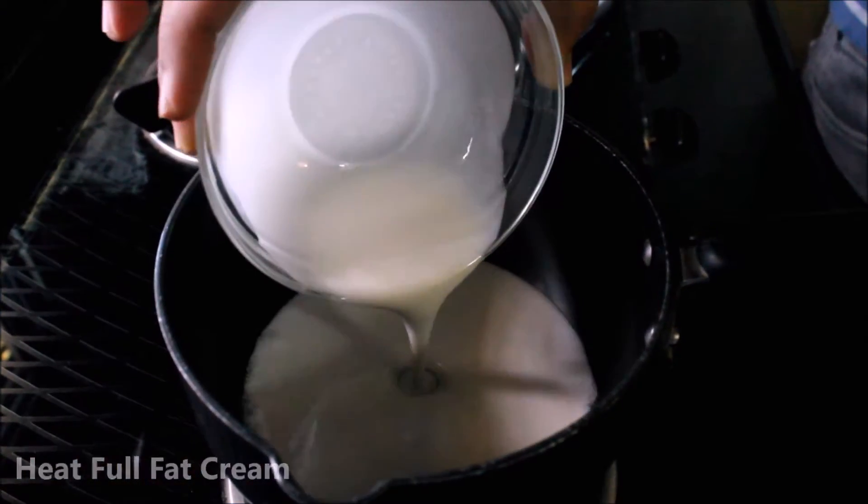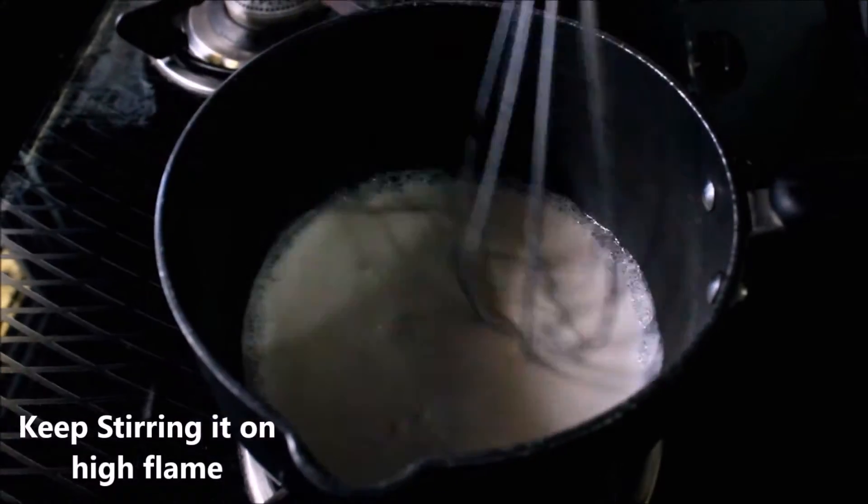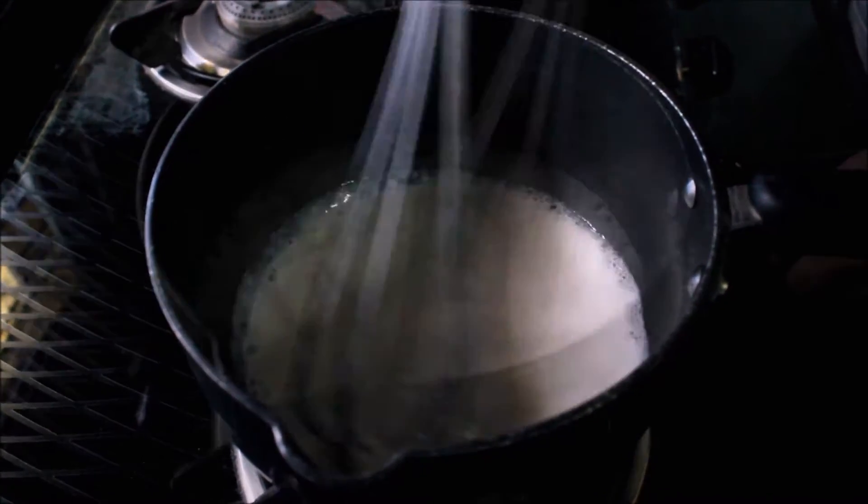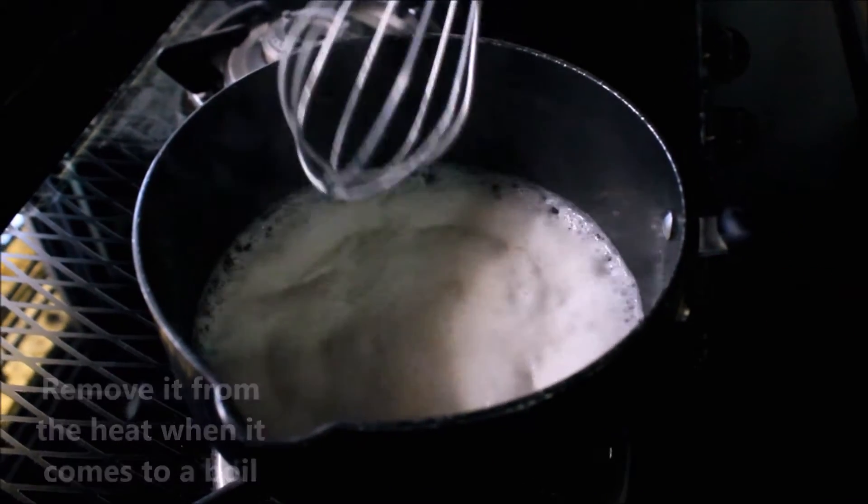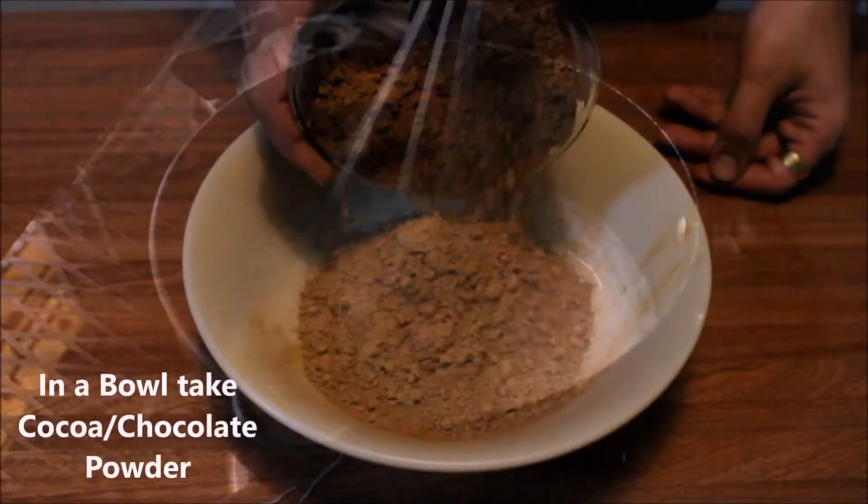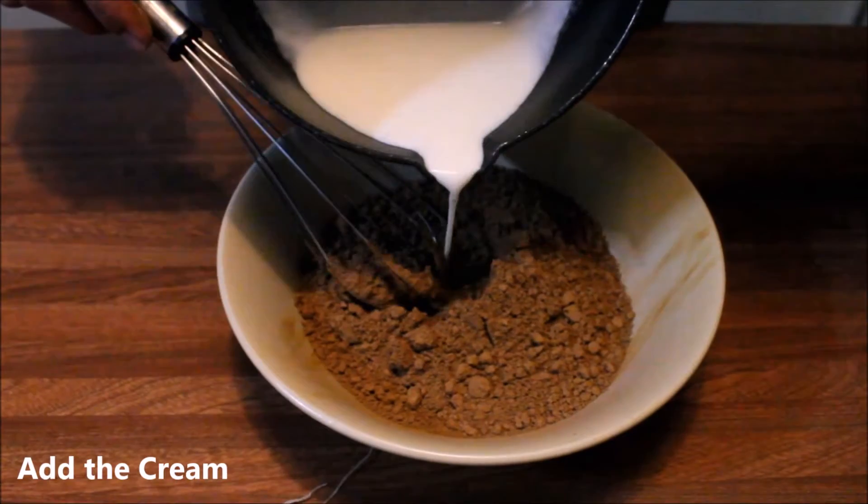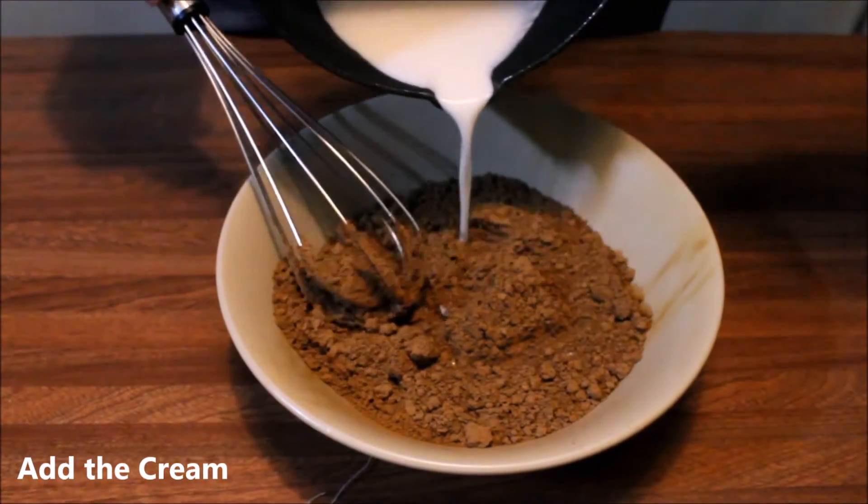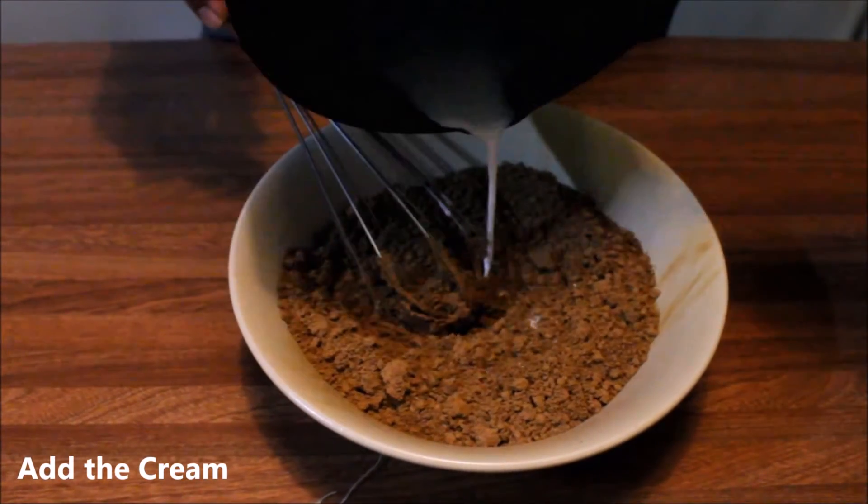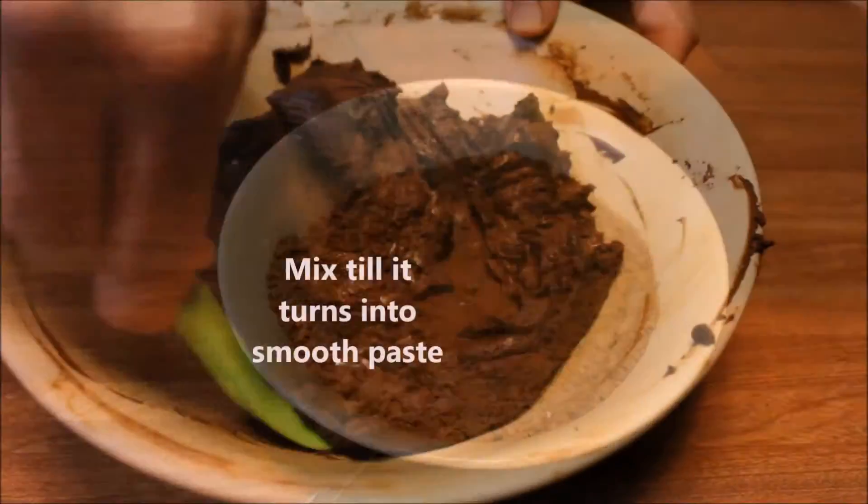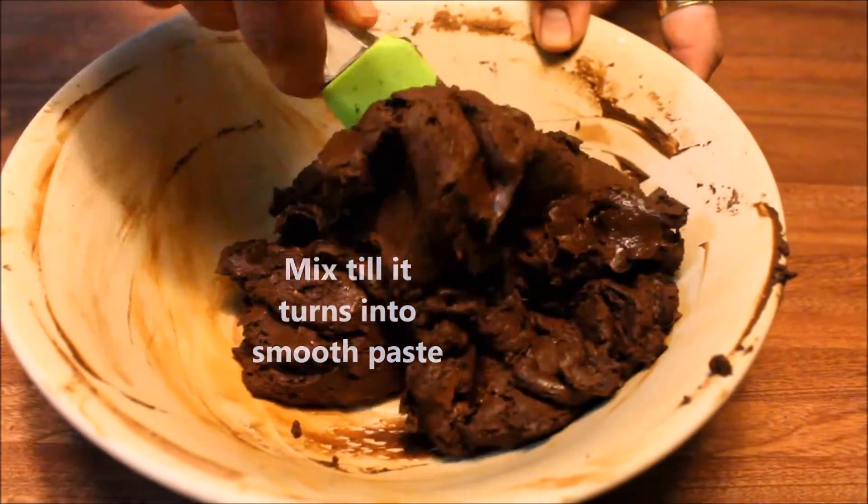Now heat some full fat cream in a sauce pan and keep stirring it on a high flame till it comes to a boil. Remove from the flame as it comes to a boil and in a bowl take chocolate powder or cocoa powder and add this cream to it. Now you need to mix this together till it becomes a thick smooth paste.